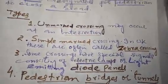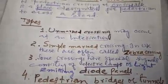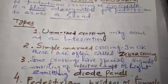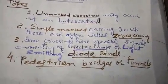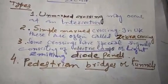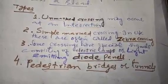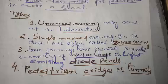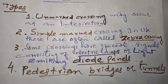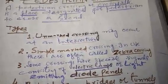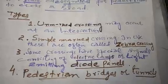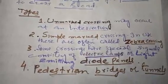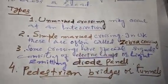The first type is the unmarked crossing. This may occur at any intersection — wherever two or more roads meet. There is no mark or sign at this type of crossing, so the first type of pedestrian crossing is the unmarked crossing, which can be found at any intersection.